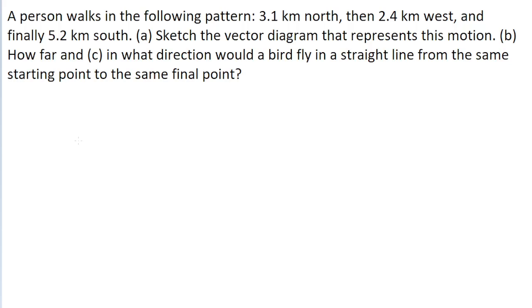The first part of this problem asks us to sketch the pattern of this person's motion. Let's say this is the person's starting point. First they travel 3.1 kilometers north. So let's draw a first vector pointing upwards north. We'll call that vector A.